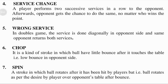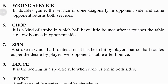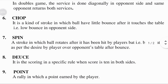Wrong service: the ball must pass over the short service line on the opponent's court; otherwise it counts as a fault. In doubles games, the service is done diagonally to the opponent's side, and the same opponent returns both services. This means the player serves the service across the court to the opponent, and the same opponent player receives the service.